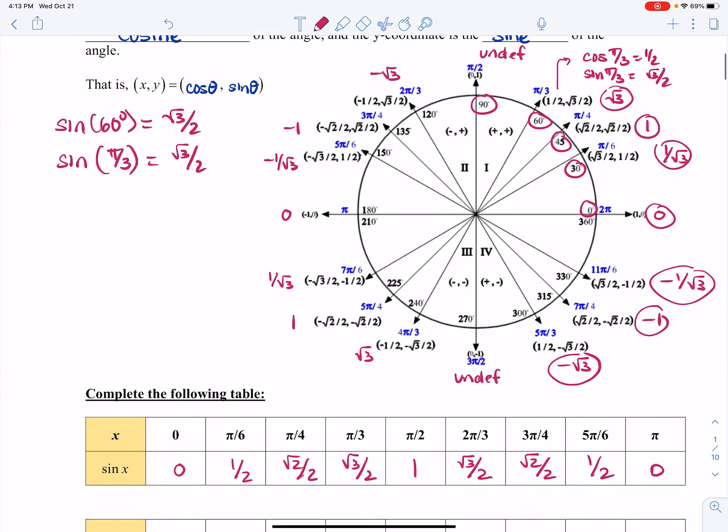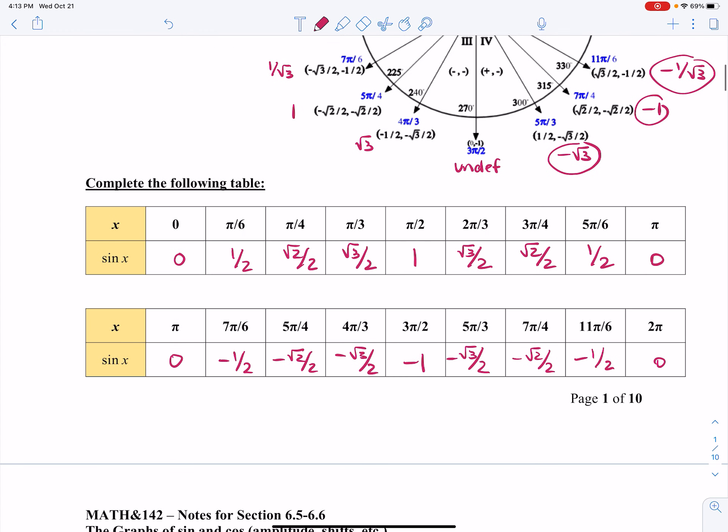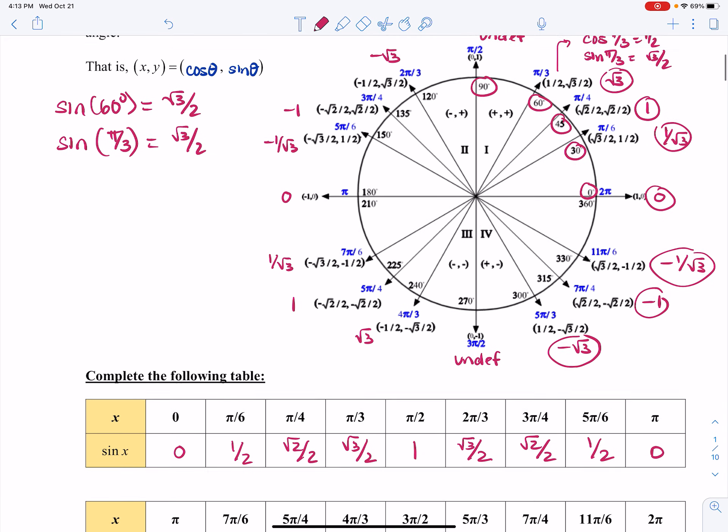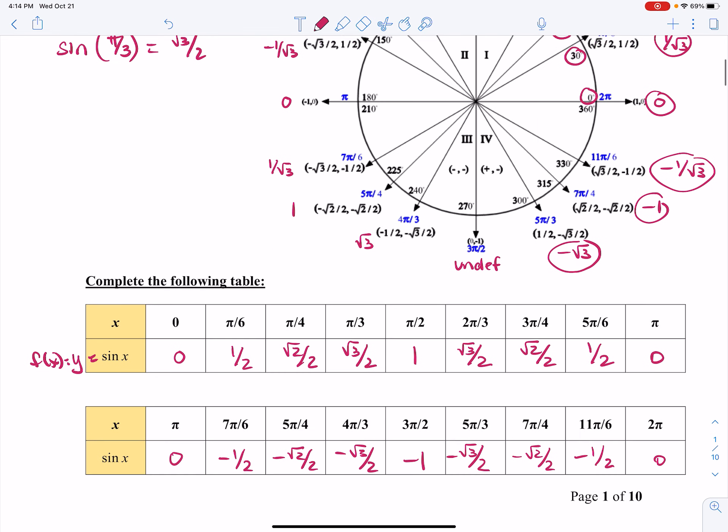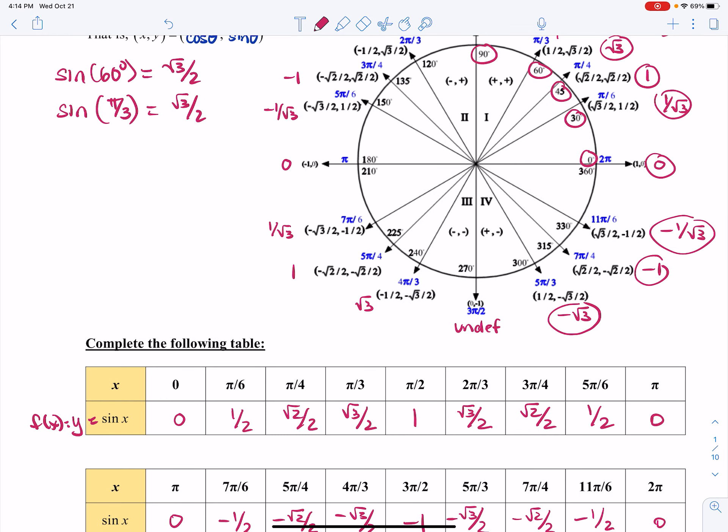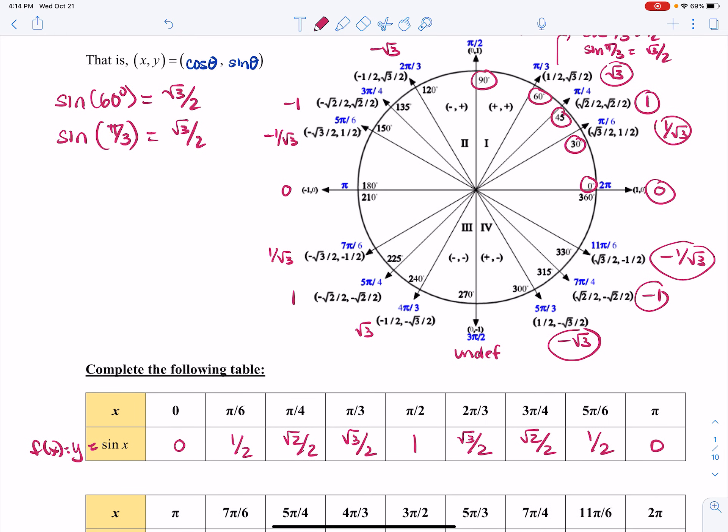So looking at this table right here, this is a table that maps x talking about x as the angle and sine of x as the output. So this is y equals sine of x or f of x equals sine of x, because we want to know as a function, what does the sine do? So I've already filled in the values. And remember, if I'm looking at the sine, I'm looking at the y-coordinate of each point.